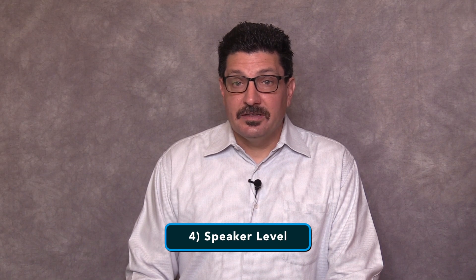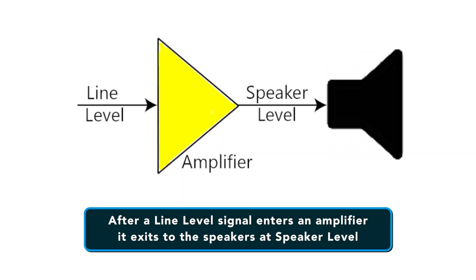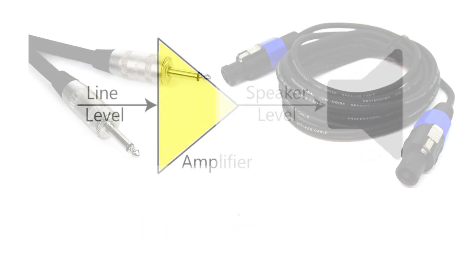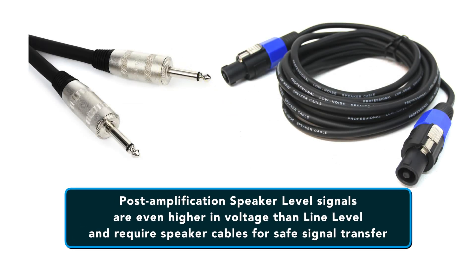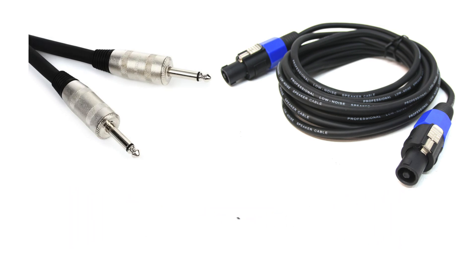The fourth signal is speaker level. After line level signals enter an amplifier, they exit to the speakers at what is called speaker level. Post-amplification, speaker level signals are even higher in voltage than line level and require speaker cables for safe signal transfer.